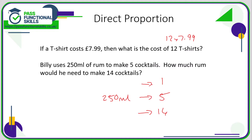250 divided by 5 is 50, so 50 millilitres is needed for one cocktail. Therefore, for 14 cocktails it's going to be 50 multiplied by 14. 50 multiplied by 14 is 700, so he's going to use 700 millilitres of rum.